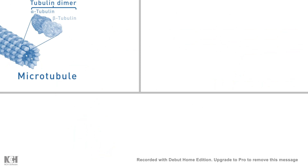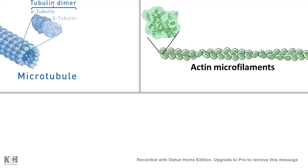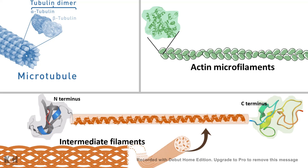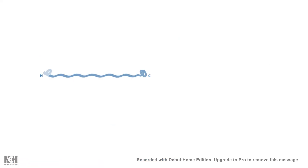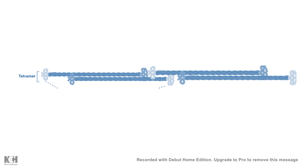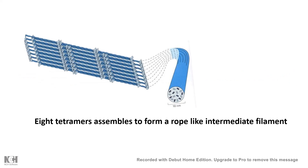Unlike microtubules and actin-based microfilaments, we don't have a globular subunit in intermediate filaments. The fundamental subunit is a rod-like structure with an N-terminus and C-terminus, and in between there is a long stretch of alpha helix. These subunits first assemble in the form of a dimer, coiling around each other. These dimers then form a staggered tetramer. The staggered tetramers assemble side by side like a necklace, forming a rope-like structure. Eight such tetramers assemble to form the cable or rope-like structure that is an intermediate filament.